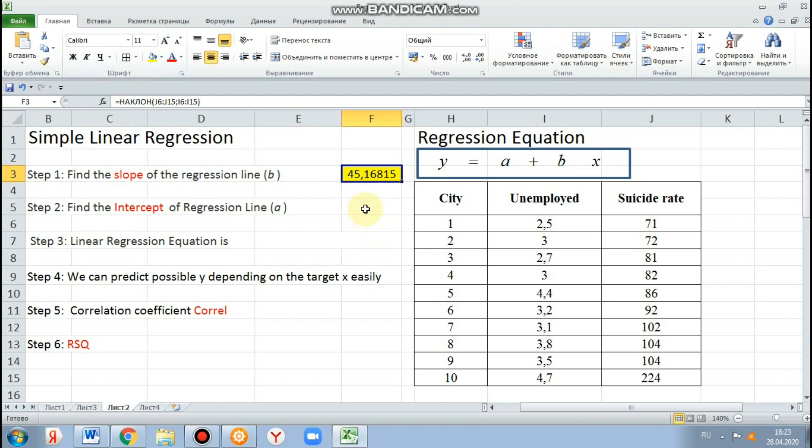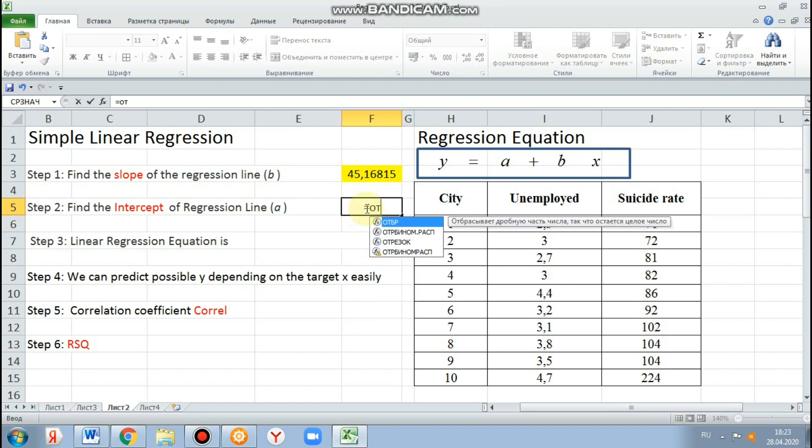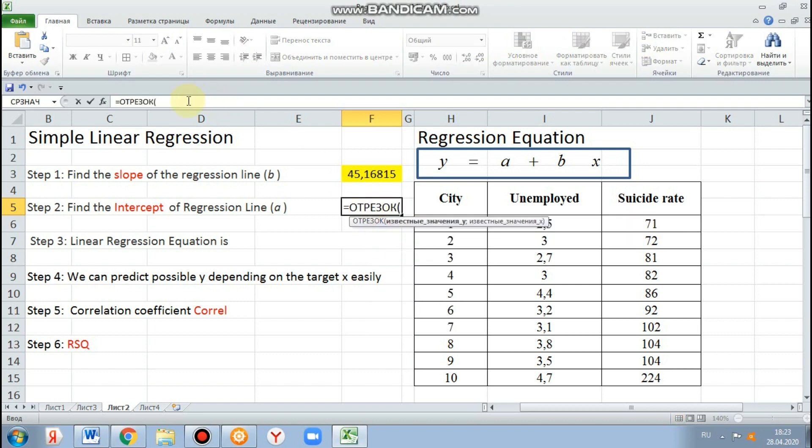Next, coefficient a, intercept. b is equal, b is 45.16815, a is minus 15.32003.